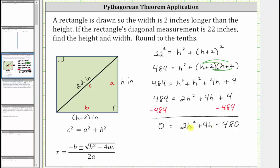Notice the greatest common factor among all three terms is two. Let's factor out the two from the right, which gives us zero equals two times the quantity h squared, plus two h, minus 240.